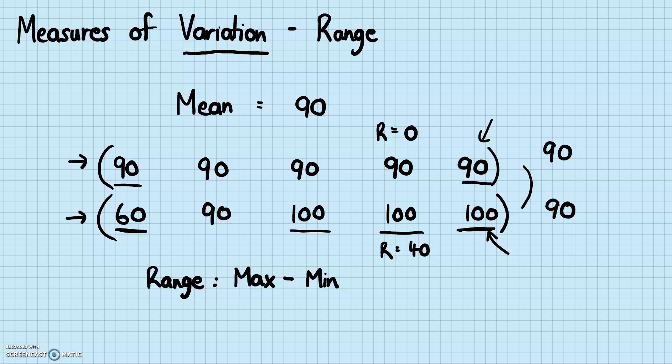So even though they have the same mean, by looking at the range, you can tell that they are two very different data sets. So that's why we also use measures of variation. And there are more ways to measure variation in a data set. Range is just the simplest way to do that.